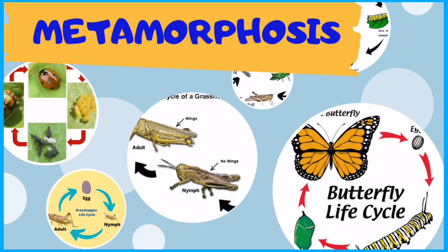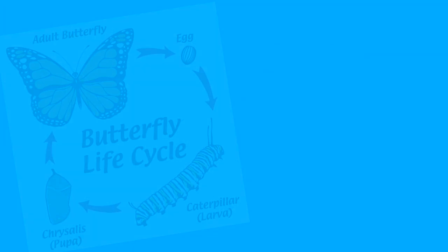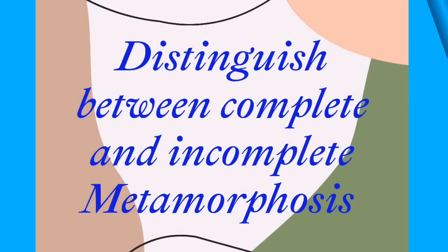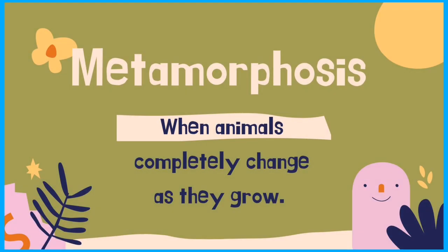Metamorphosis sounds familiar — all living things undergo growth and changes through their life, which is what a life cycle is all about. In the science of life, the striking change of form or structure in an individual after hatching or birth is what we call metamorphosis. In this video, we will distinguish between complete and incomplete metamorphosis.